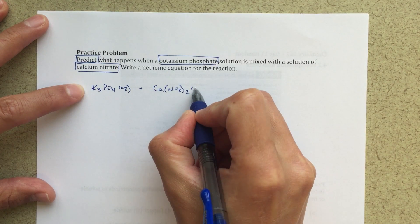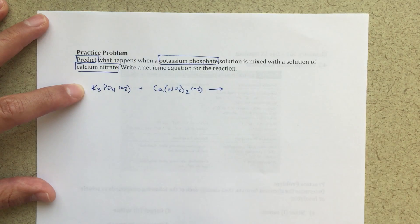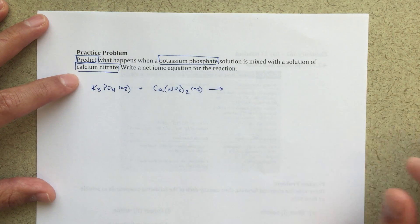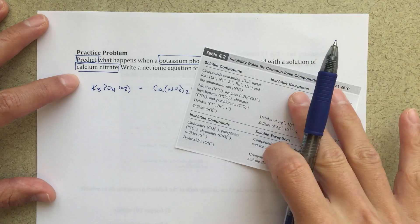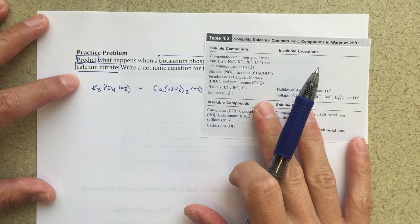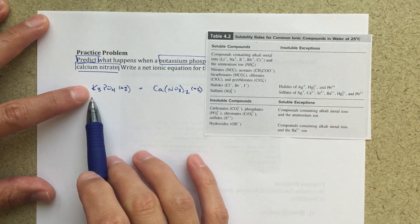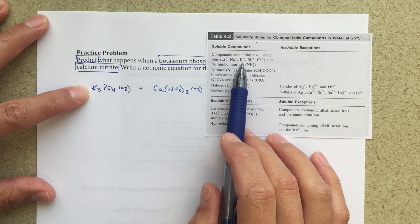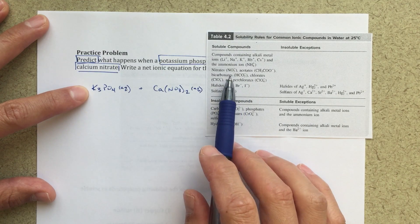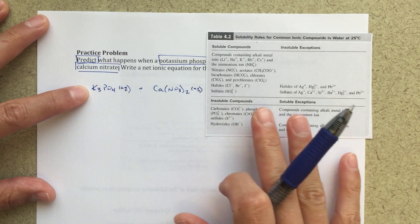This is, again, going to be aqueous. I know that because I'm told that there's solutions, but also I could use my solubility rules to figure out that things that contain potassium will be soluble, and also things that contain nitrate will also be soluble all of the time.